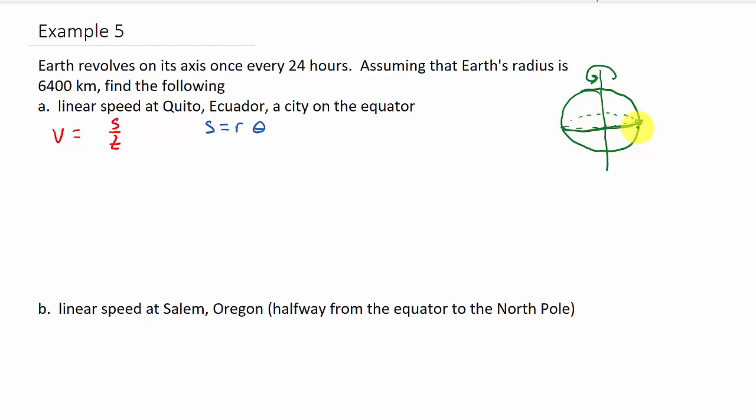Let's find R. We know that R is 6400. And then we need theta. They tell us it revolves on its axis once every 24 hours. So when this point here is going around and then back, that's one revolution. That's 360 degrees. It makes a complete circle. But since theta needs to be in radians, that's 2 pi.